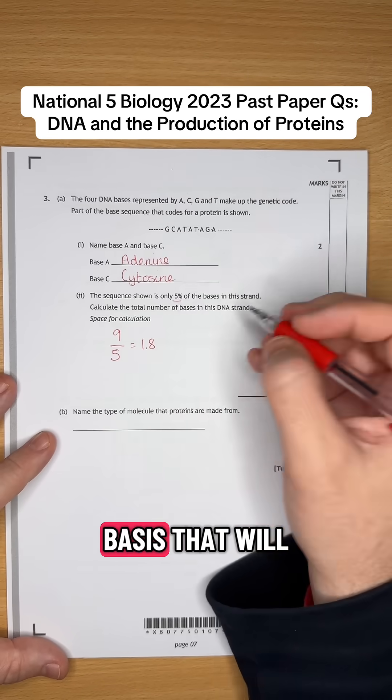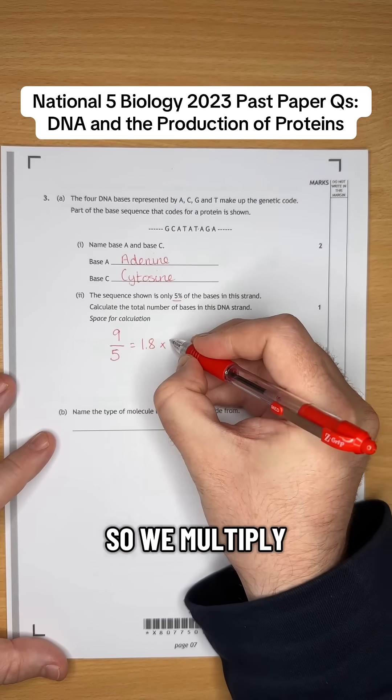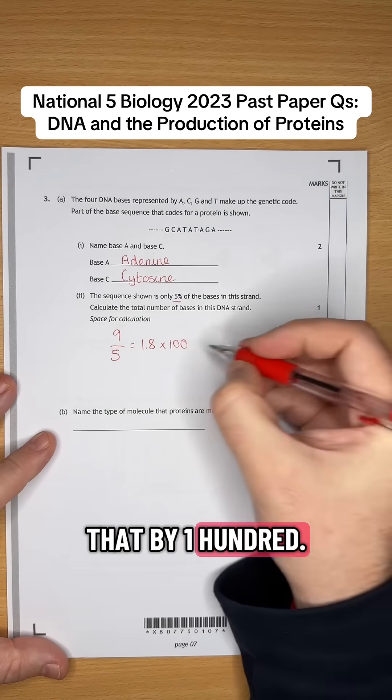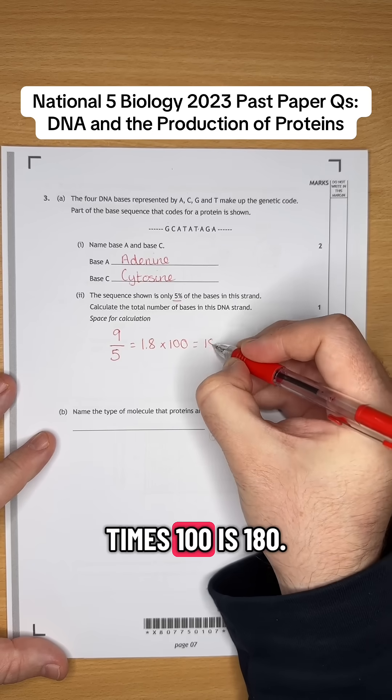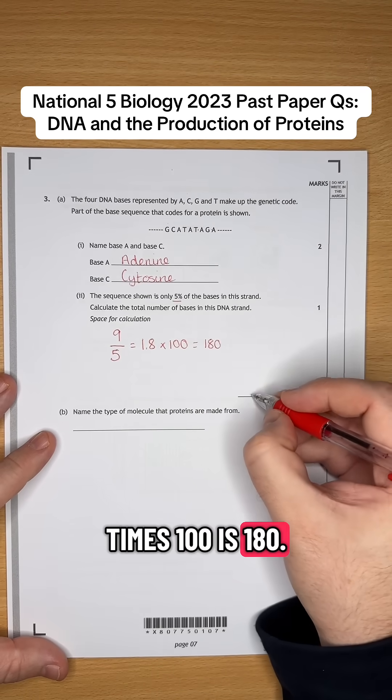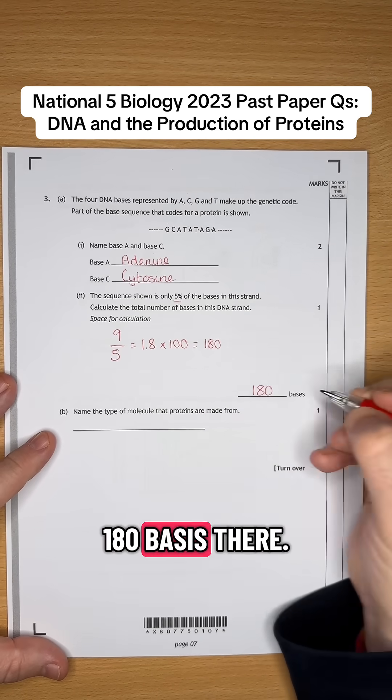Now we want to find out the total number of bases, so that will be 100% of the bases. So we multiply that by 100. 1.8 times 100 is 180. So we've got 180 bases there.